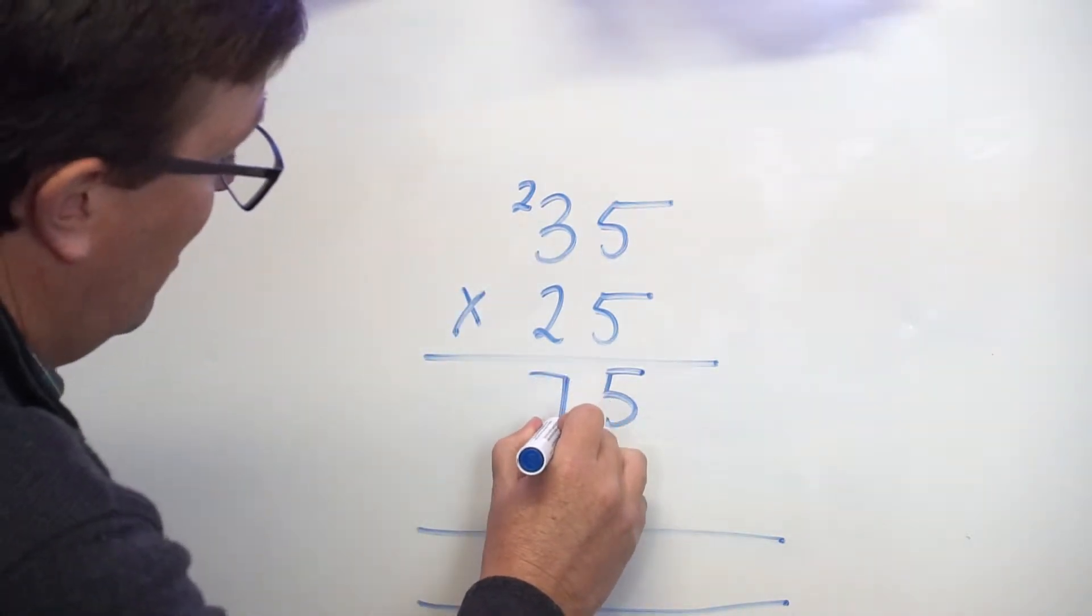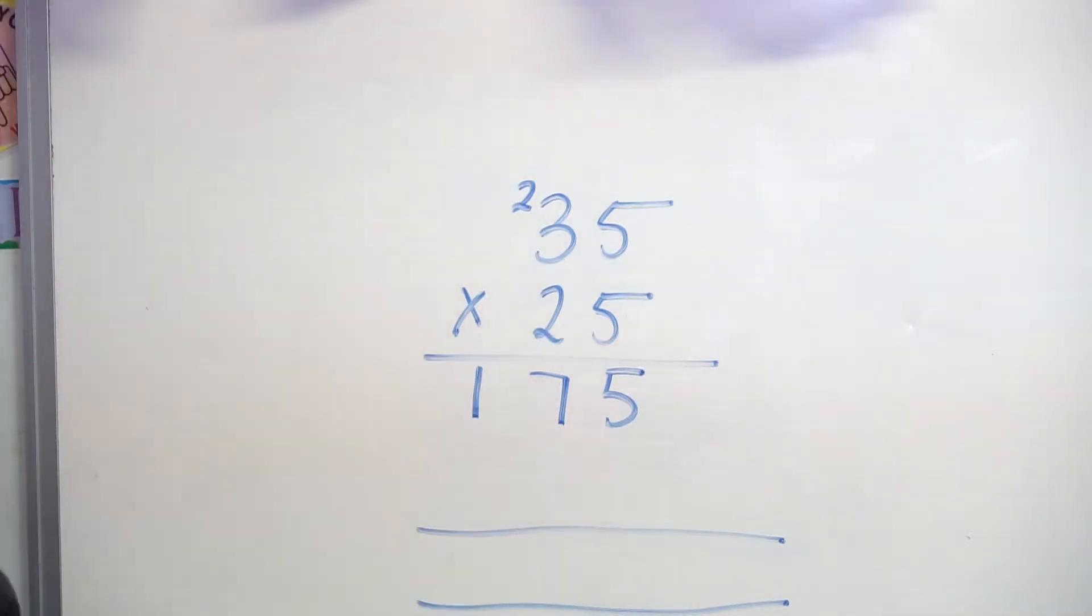So I put the 7 in the tens column, and the 1 in the hundreds column. Now comes the tricky part.